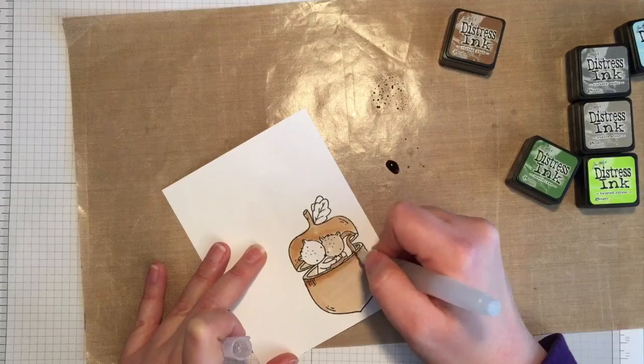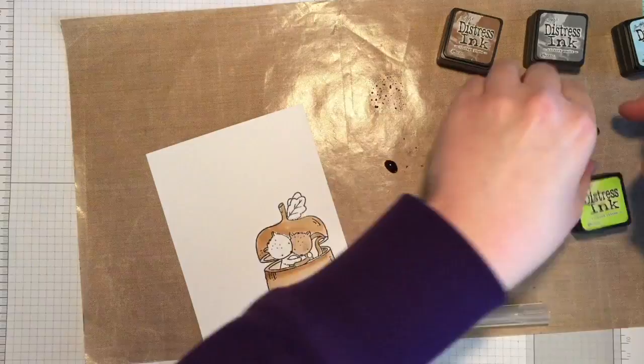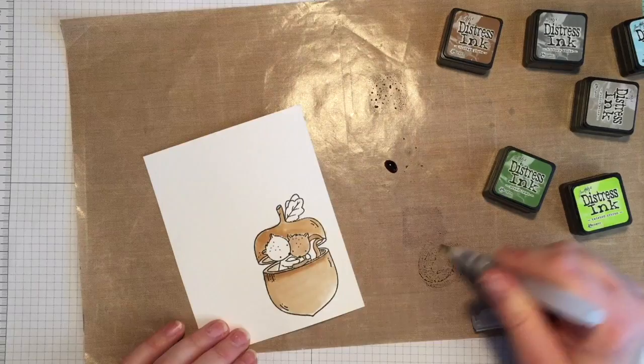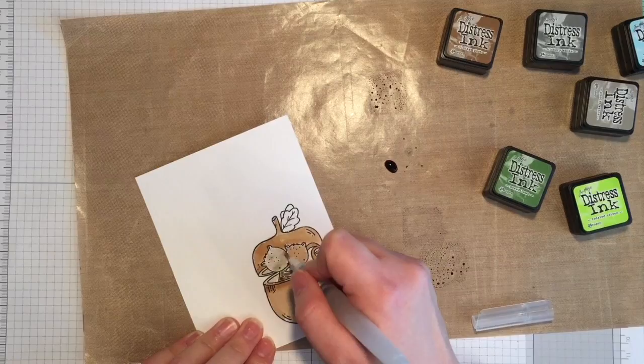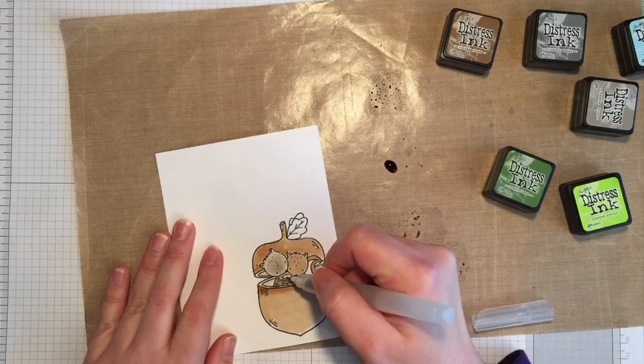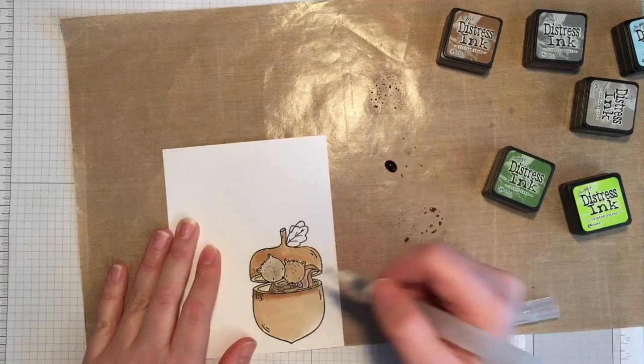Then I'm going to take two gray colors for the other squirrel. I'm using pumice stone and hickory smoke. So I'm going to start with the pumice stone and go over the little squirrel and then use the hickory smoke to add a little bit of detail and shading. I'm also going to add in a little bit of the brown just to give it more of a brown undertone. The pumice stone already has that brown undertone but this just enhances it a little bit more.